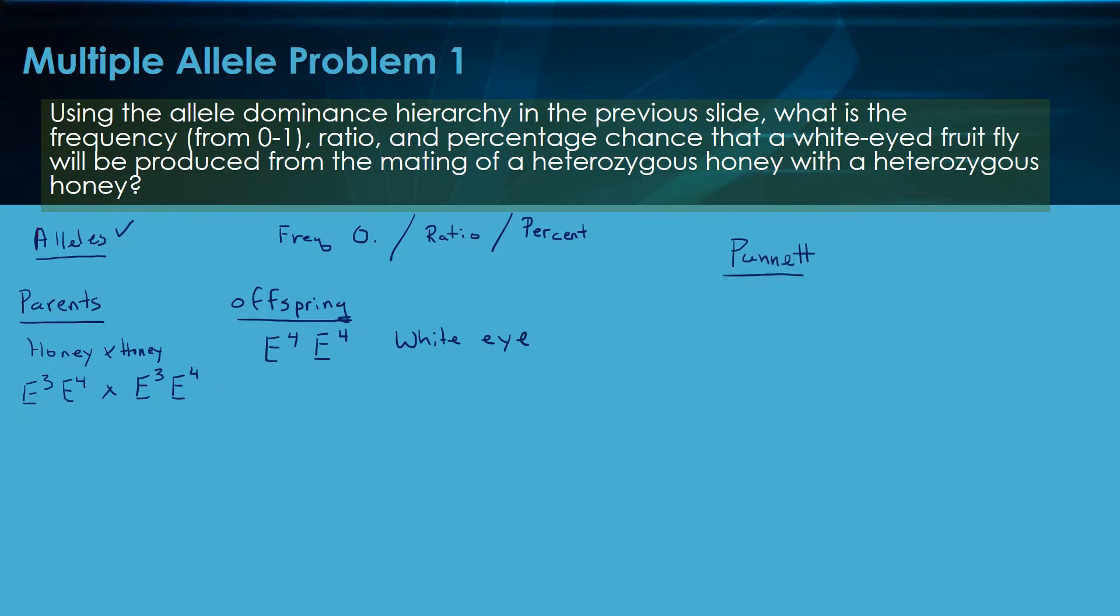Put our Punnett over here. Plug our parents in. Heterozygous honey, put the gametes on top here. The other heterozygous honey, put its gametes over here on the side. That is what the Punnett square is representing and modeling. It's actually a simulation. We're going to see all the possible offspring of these two being mated.